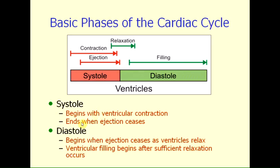There are two basic phases of the cardiac cycle. We call these phases systole and diastole. Systole begins with the actual contraction of the ventricular muscle — we are talking about the cardiac cycle as it pertains to the ventricular muscles themselves. So systole begins with contraction, and shortly after the muscles begin to contract, the ventricles will then be able to eject blood into their outflow tracts. So we have the period of ejection.